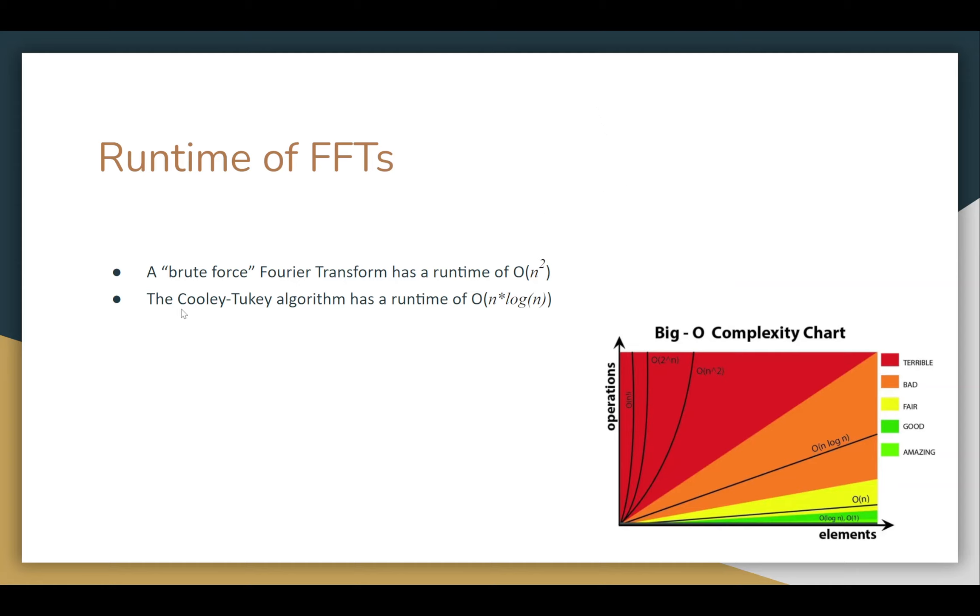Looking at the runtimes, we saw earlier that the brute force Fourier transform has the runtime of O of n squared, while the Cooley-Tukey algorithm has a runtime of O of n log n. If we look at this big O chart, we can see how big of a difference that makes. The n squared and the n log n, these are generic forms, have quite a substantial difference in the runtime per number of elements growth rate.